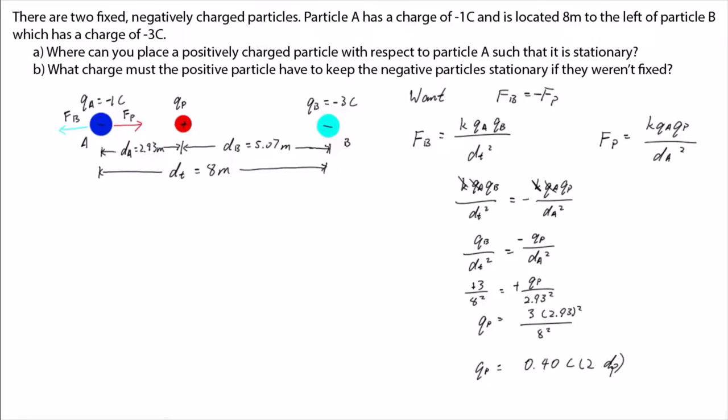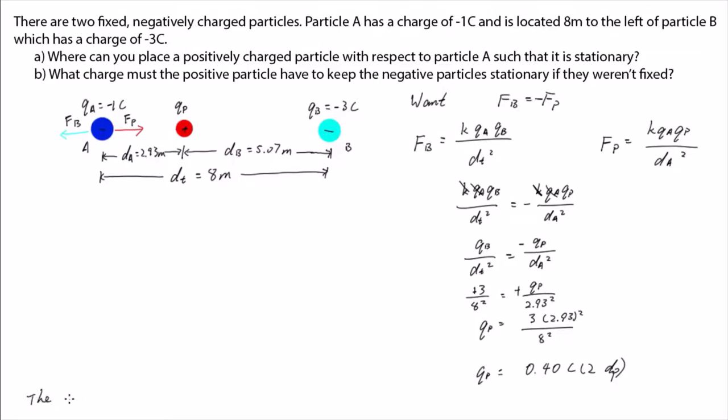Remember that due to the difference in distance, the positive particle must have a smaller charge than the negative particle. 0.4 coulombs is smaller than 3 coulombs, so this condition is satisfied and our answer is plausible.